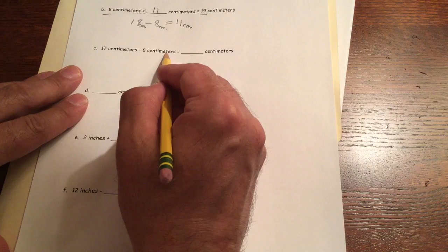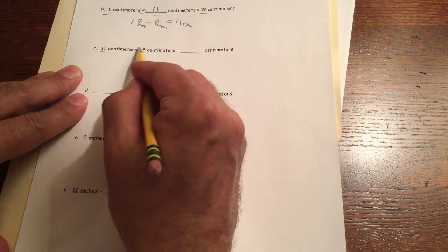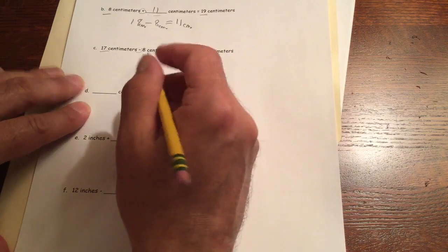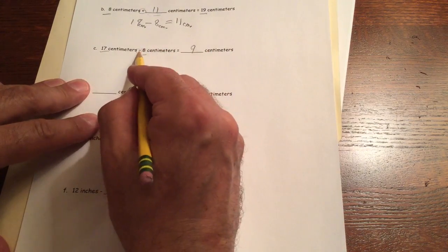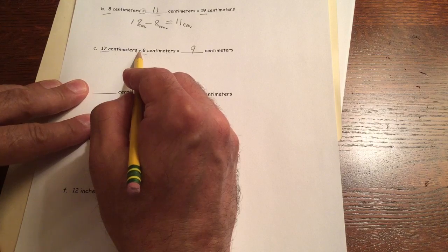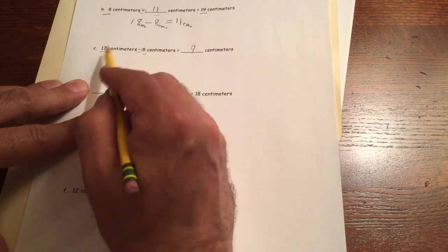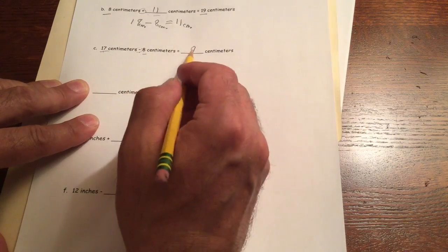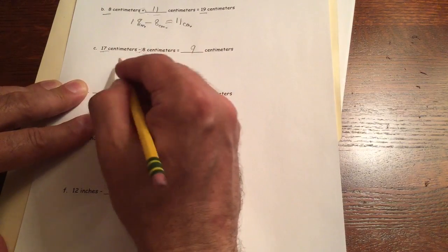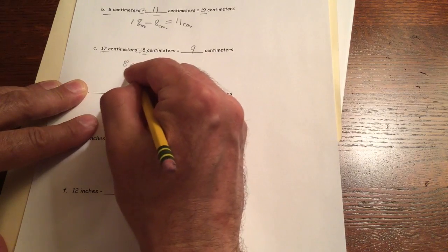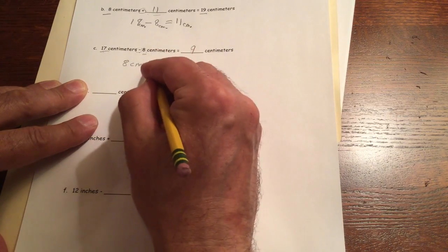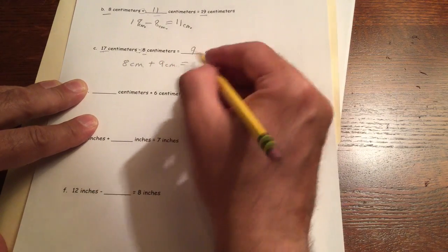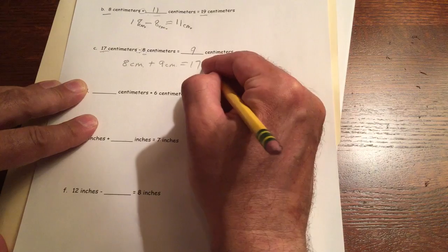17 centimeters minus 8 centimeters. So we're looking at 17 minus 8. That's 9. And then since this is subtraction, we're going to check it with a related addition sentence, which means if we take the 17 apart to 8 and 9, we should be able to put the 8 and 9 back together and get the 17, right? So we should have 8 CM plus 9 CM equals 17 CM.